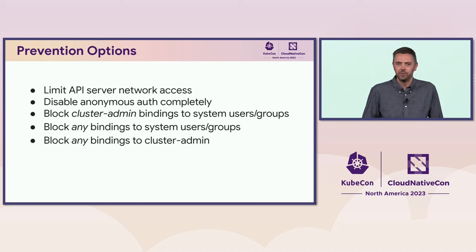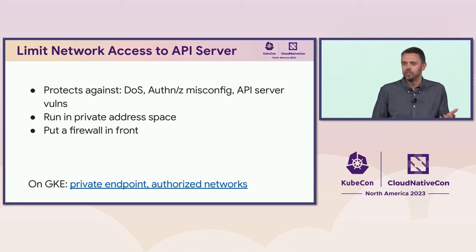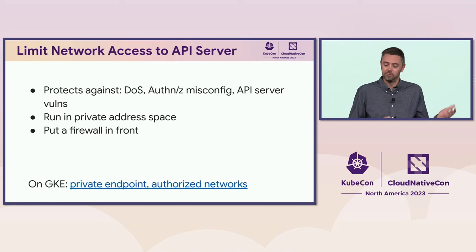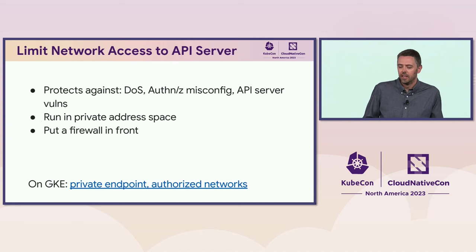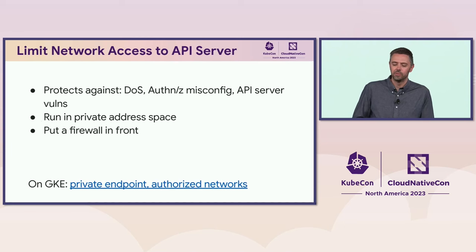There's a big list of prevention options we'll step through. The most obvious one: this was an internet-exposed API server. If it wasn't network-reachable, this wouldn't have been a problem, or would have been a much smaller one. Limiting network access to the API server also provides denial-of-service protection and some protection from other authentication or authorization misconfigurations or API server vulnerabilities. You can run it in a private address space or put a firewall in front of it — on GKE, we let you do both.